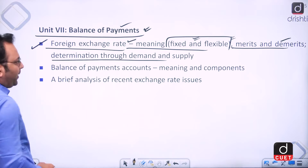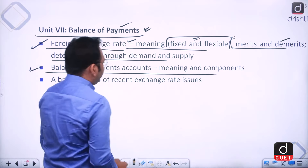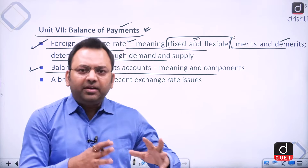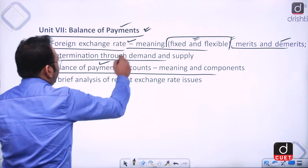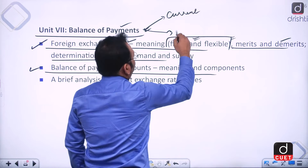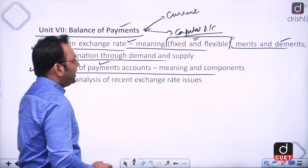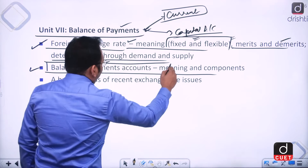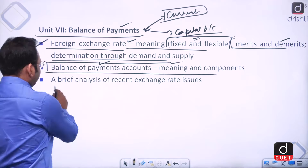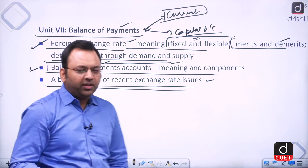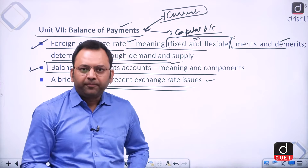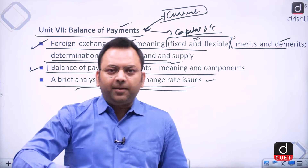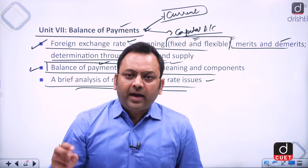We will study the merits and demerits of fixed versus flexible exchange rates, and the meaning and components of BOP — the current account, capital account, and various trade accounts. We will also do a brief analysis of recent exchange rate issues: after the Russia-Ukraine war, capital outflows caused the rupee to depreciate, leading to multiple trade issues.